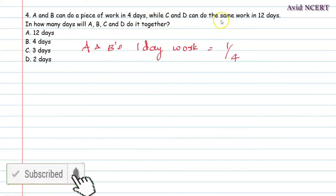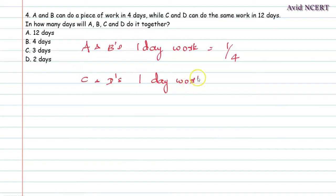And from the second sentence, C and D can do the same work in 12 days. That is C and D's one day work will be equal to 1 by 12.